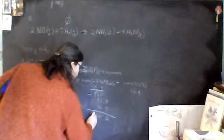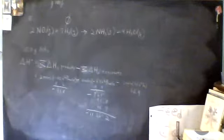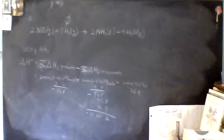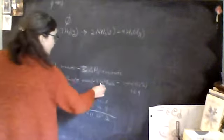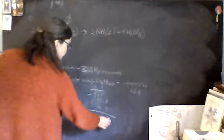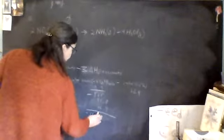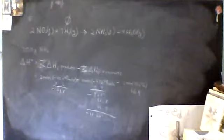So, negative 1,126.2. How precise should I be here? This one's only precise to the ones place. So that's where I should be. Negative 1,126 kilojoules.